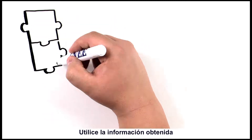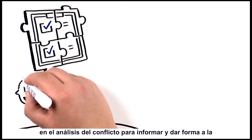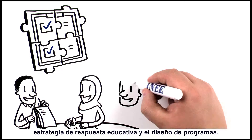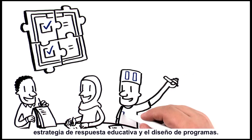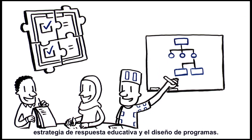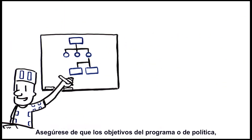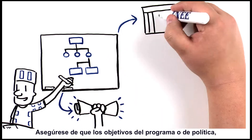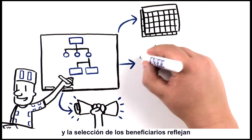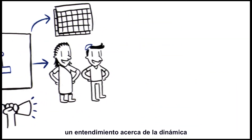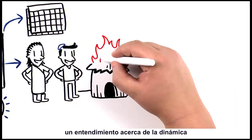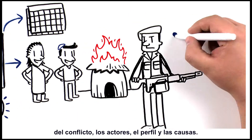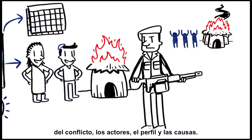Utilise the information gained from the conflict analysis to inform and shape the education response strategy and programme design. Make sure that the programme or policy objectives, the timing of the programme, and the selection of beneficiaries reflect an understanding about the conflict's dynamics, actors, profile and causes.